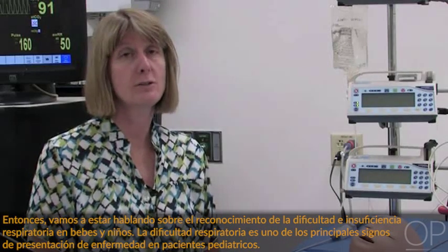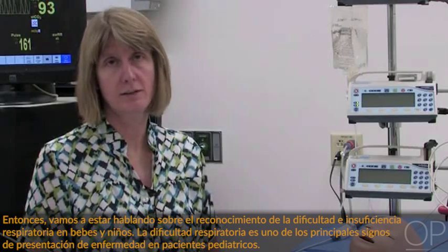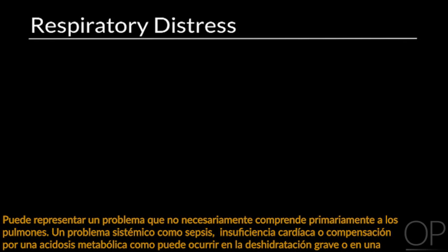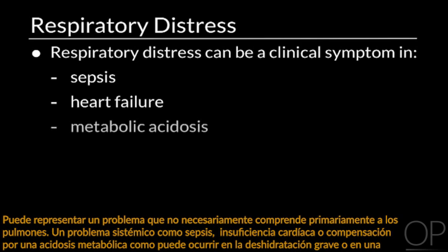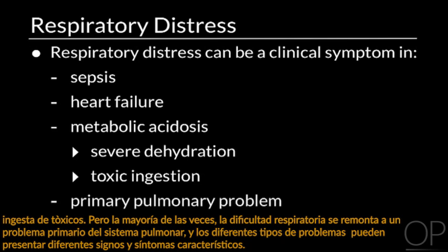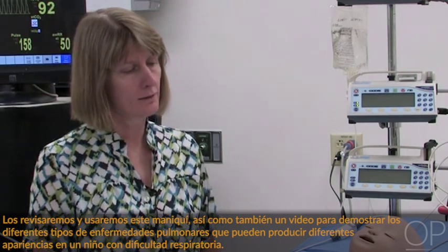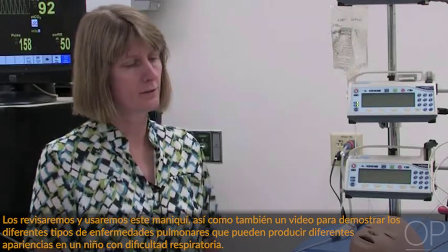We're going to be talking about recognition of respiratory distress and failure in an infant or child. Respiratory distress is one of the most common presenting signs of illness in a pediatric patient. It can represent a problem that doesn't necessarily primarily involve the lungs — a systemic problem like sepsis or heart failure, or compensation for a metabolic acidosis as may occur in severe dehydration or toxic ingestion. But most of the time respiratory distress can be traced back to some primary problem with the pulmonary system, and different types of problems can present with different characteristic signs and symptoms.